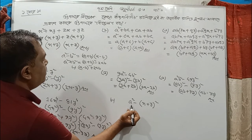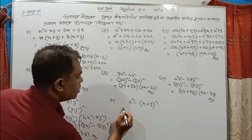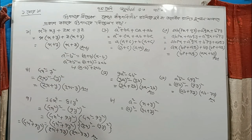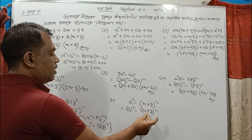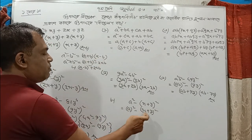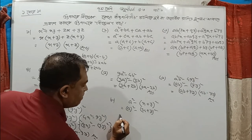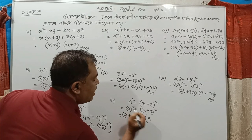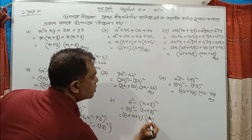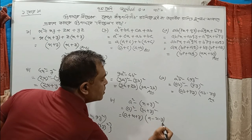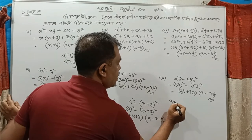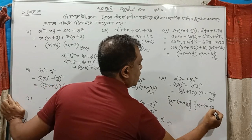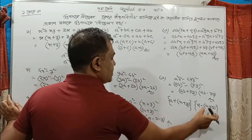A plus B, a plus B. With a plus B, second bracket into a minus B, next a half.